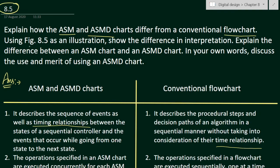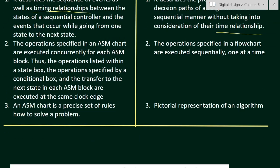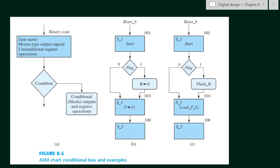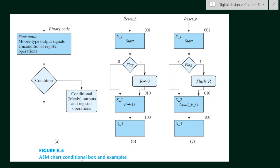In the second part we use figure 8.5 as an illustration to show the difference in interpretation. This is figure 8.5 — an ASM chart with conditional boxes and examples. This rectangular box with a rounded corner is called the conditional box. This plain rectangular box is the state box, where we write the state name. This diamond-shaped box is the decision box where we write the condition.